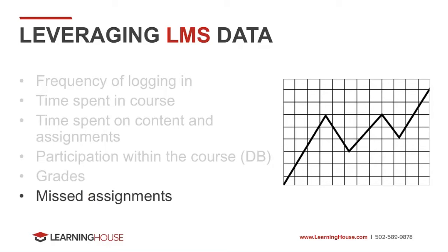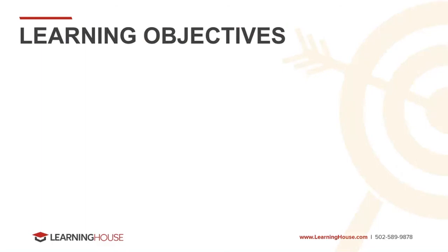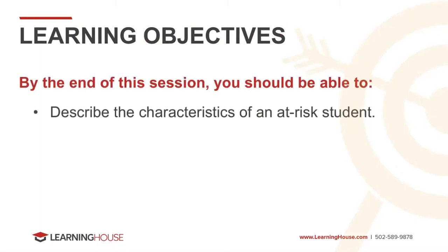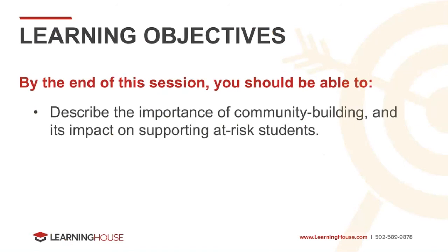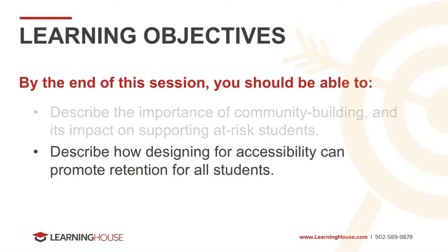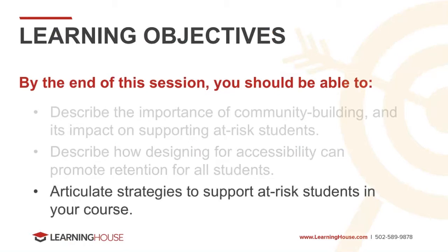Now I'm going to hand it off to Galen Davis, who will speak to student motivation and its relation to retention. By the end of this session, you should be able to describe the characteristics of an at-risk student, identify the components of motivation and how they relate to retention and engagement, describe the importance of community building and its impact on supporting at-risk students, describe how designing for accessibility can promote retention, and walk away with strategies for both course design and course delivery to support at-risk students.